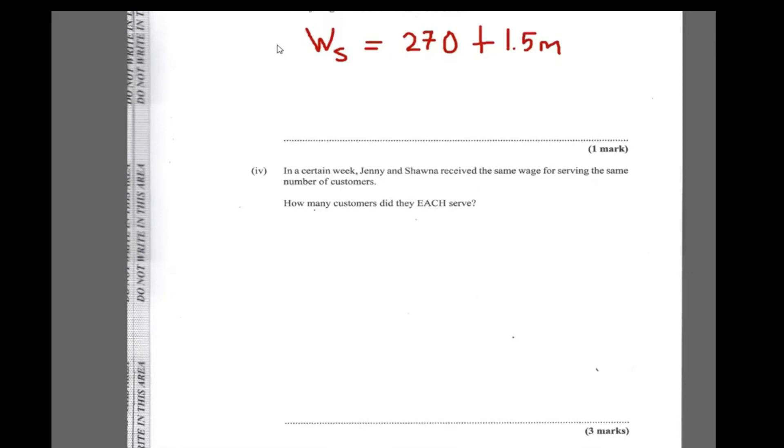It says in a certain week, Jenny and Shauna receive the same wage for serving the same number of customers. How many customers did they each serve? So in order for Jenny's wage to be equal to Shauna's wage, then we need Shauna's wage and Jenny's wage to be the same. And now Shauna's wage, as we know, is $270 plus 1.5M. That's Shauna's wage. And we know what Jenny's wage is. Jenny's wage is $600 plus $0.9N.